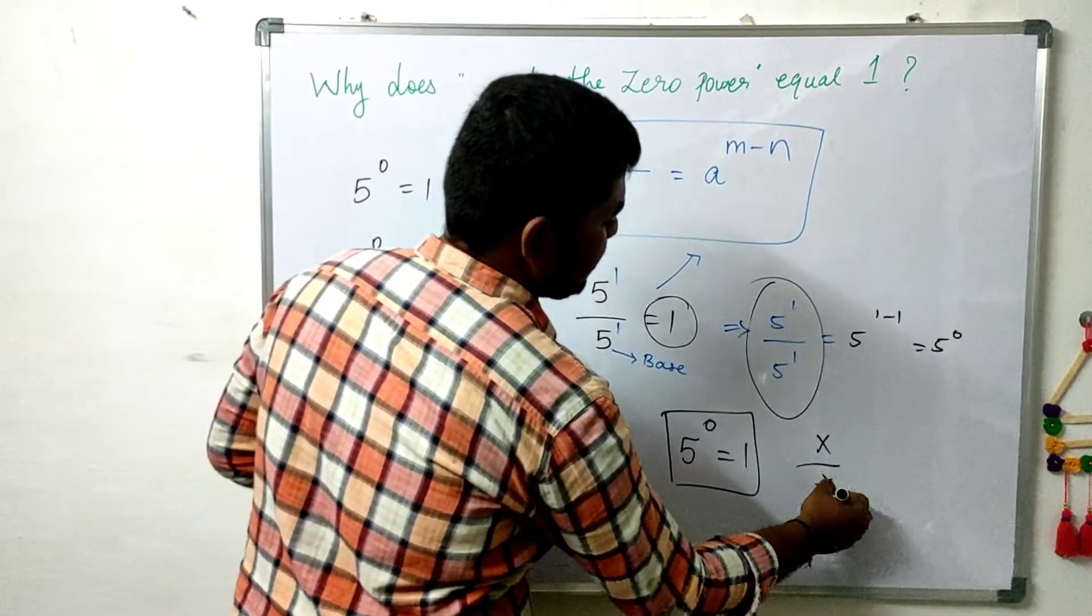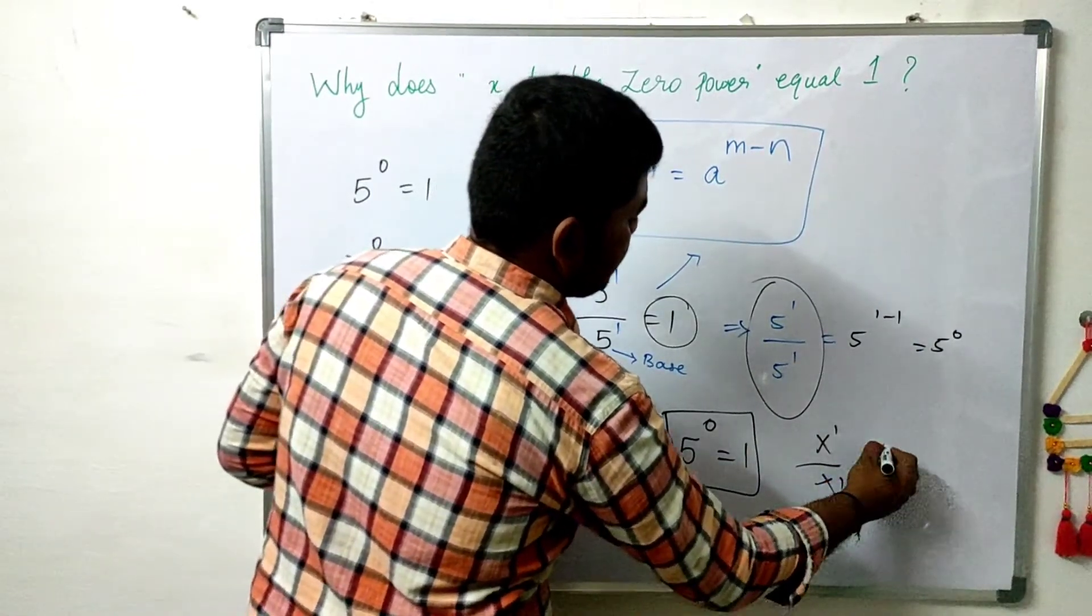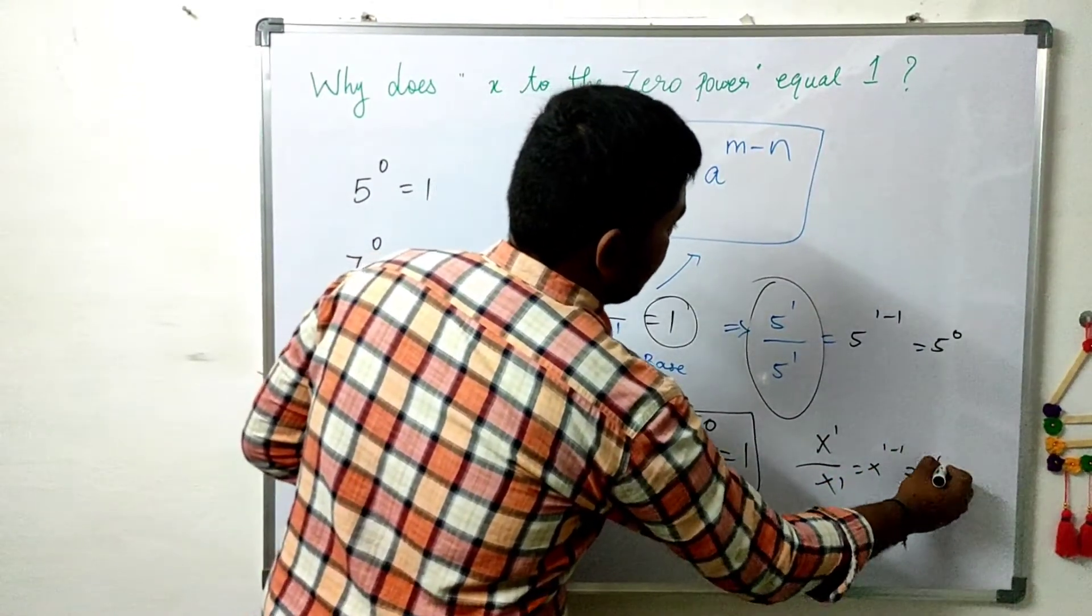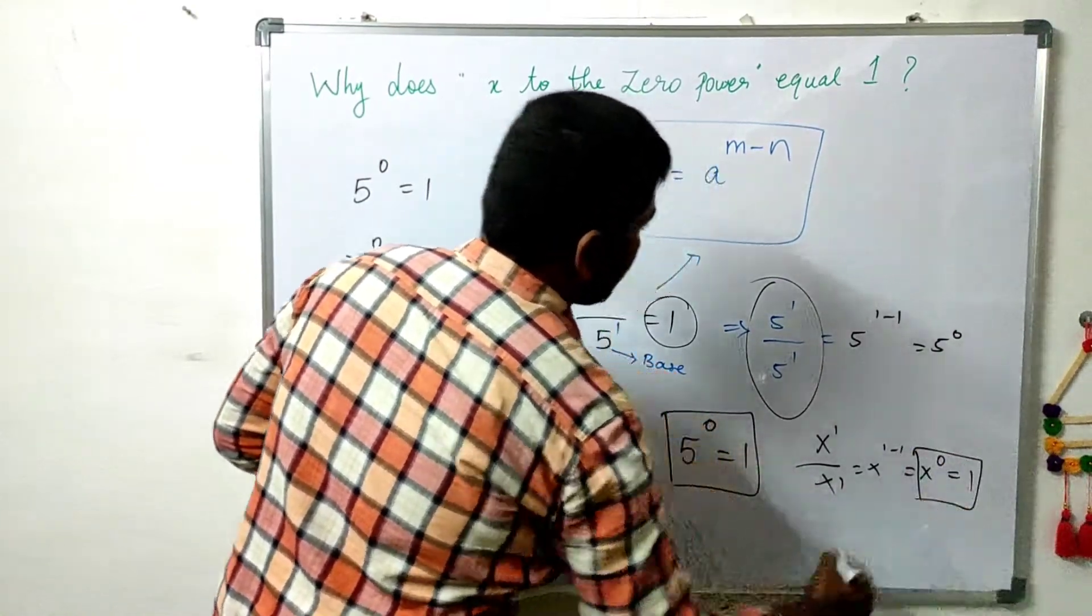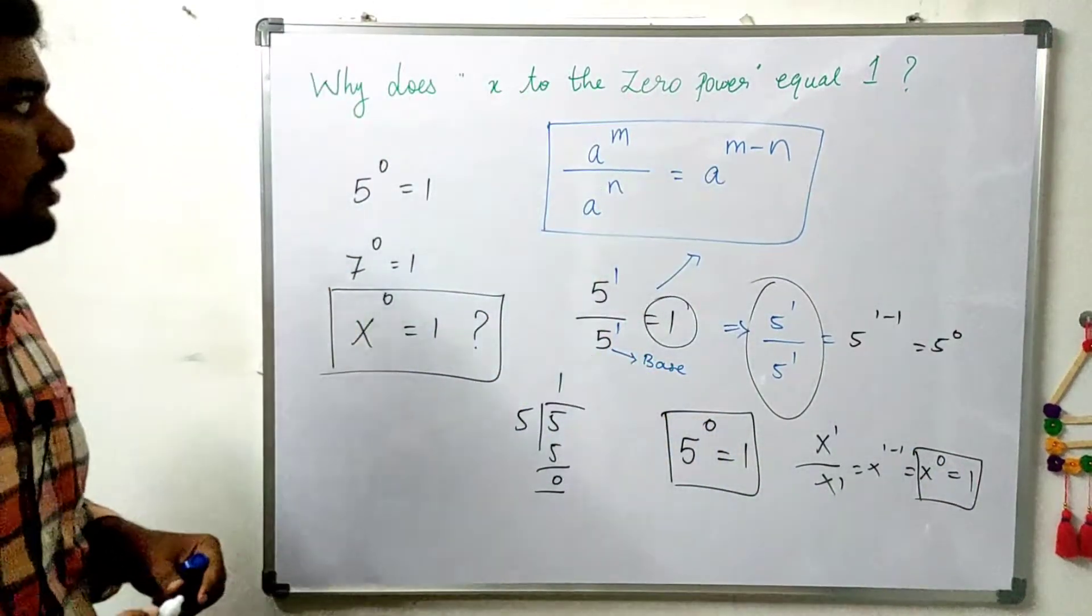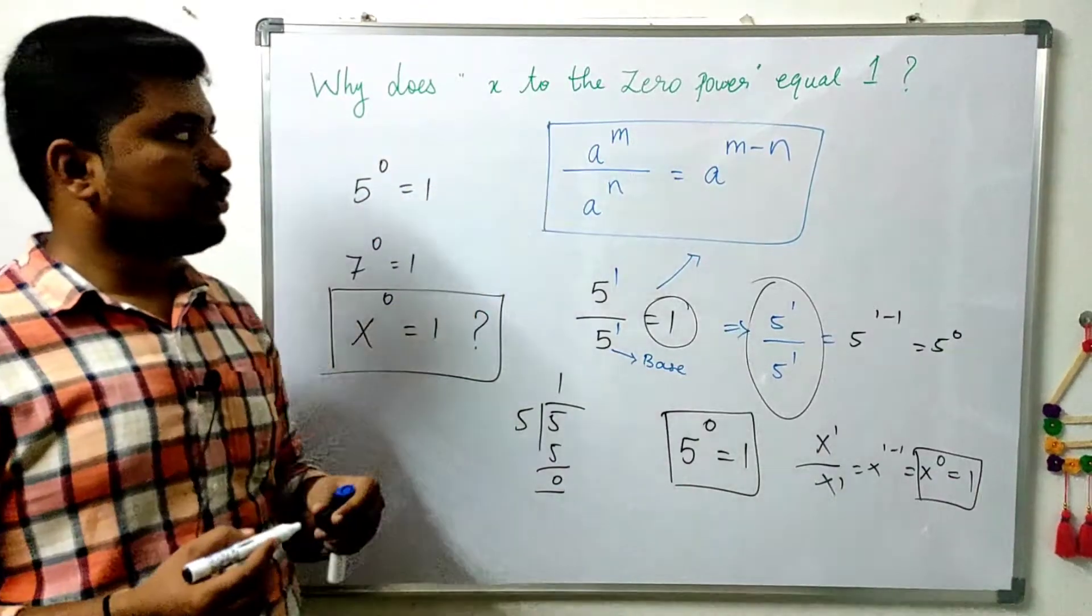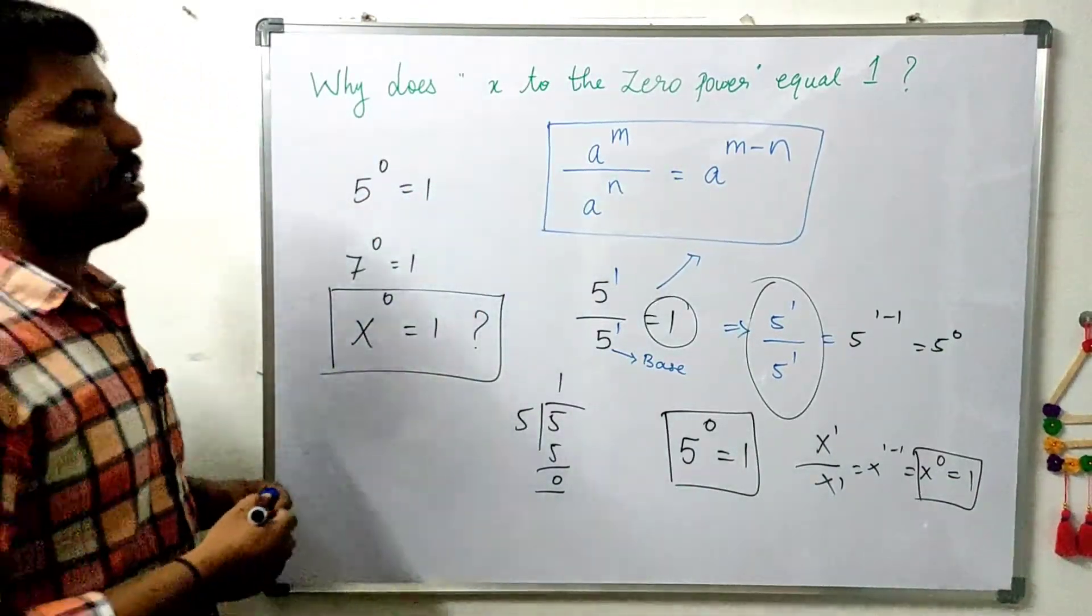Same. x divided by x is x power 1 minus 1. x power 0 is equal to 1. This is exactly why x to the power of 0 means equal to 1.